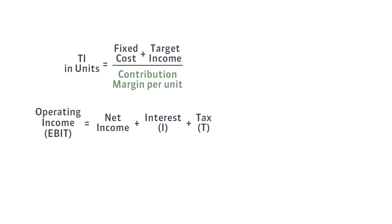But that kind of thinking is wrong, because income tax and interest will not be covered. For this reason, when the target income is expressed as net income, we need to add back the income tax and interest to get the operating income.